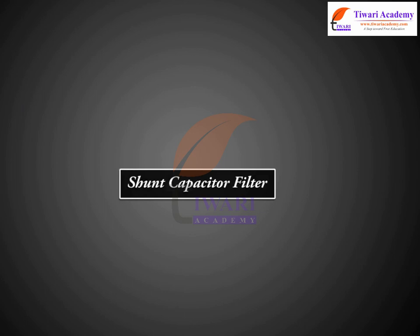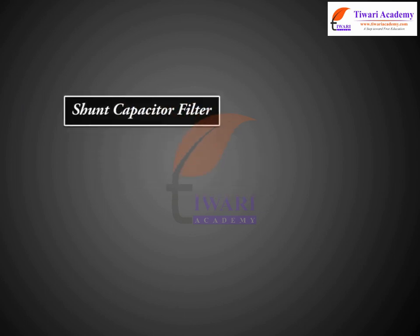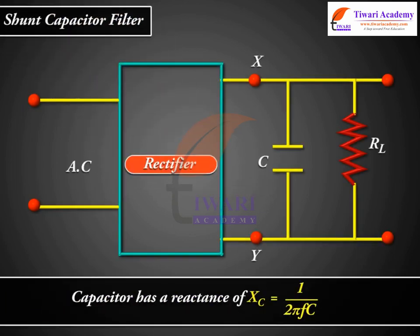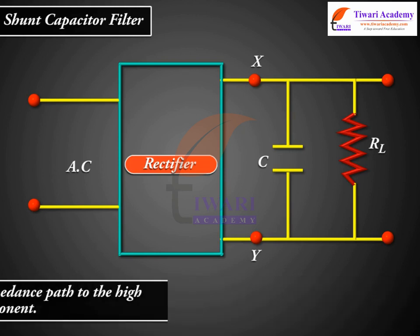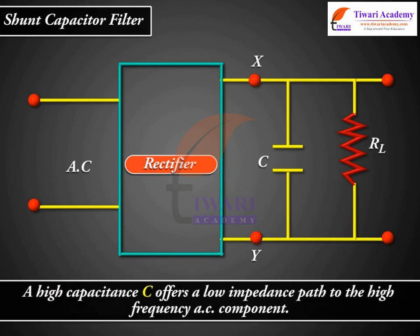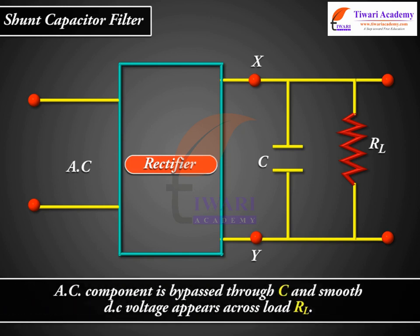Shunt capacitor filter. Capacitor has a reactance of XC equal to 1 over 2πFC. A high-capacitance C offers a low impedance path to the high-frequency AC component. AC component is bypassed through C and smooth DC voltage appears across load RL.